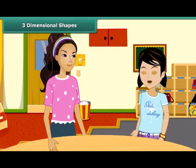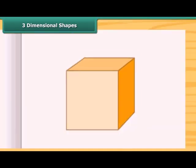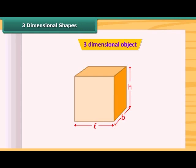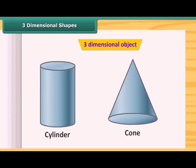What are three-dimensional shapes? A solid object having three measurements like length, breadth and height are called three-dimensional objects. Look at this cuboid. It has length, breadth and height, so this is a three-dimensional object. The cylinder, cone, etc. are the three-dimensional figures.